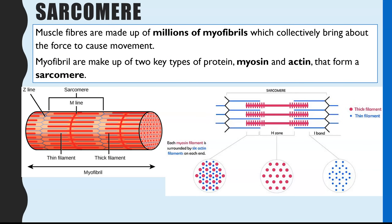Muscle fibres are made up of millions of myofibrils, which are all fused together — fused cells — and they are what collectively bring about the movement of your skeleton. One of these myofibrils is made up of two key proteins. You're probably familiar with the concept that muscles are made of proteins, and there are two you need to know about in detail: myosin and actin. They collectively create what we call the sarcomere, and they are thin and thick filaments.